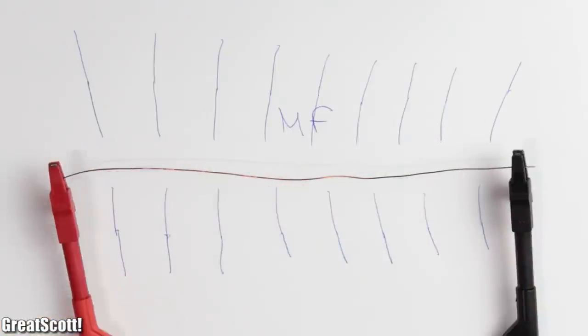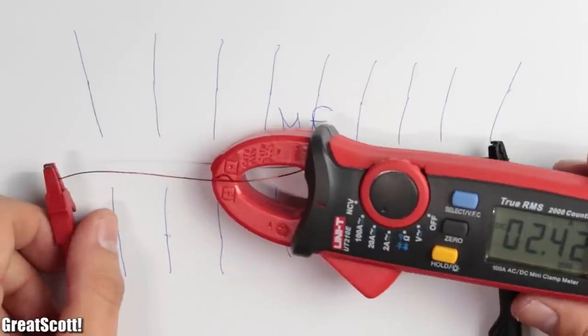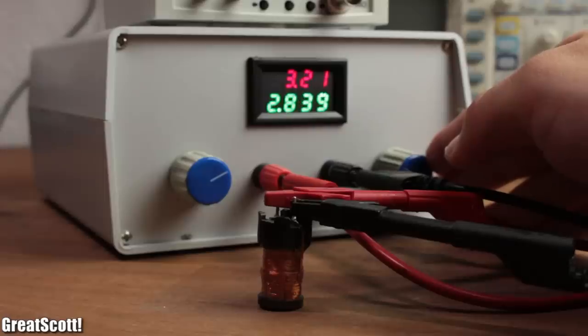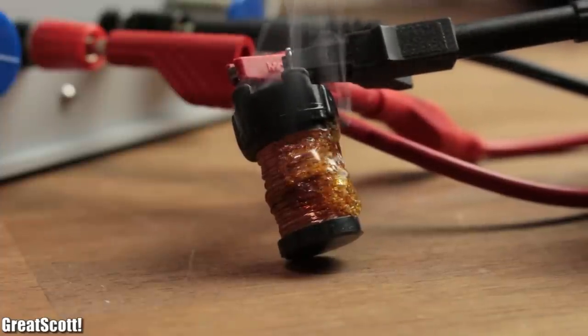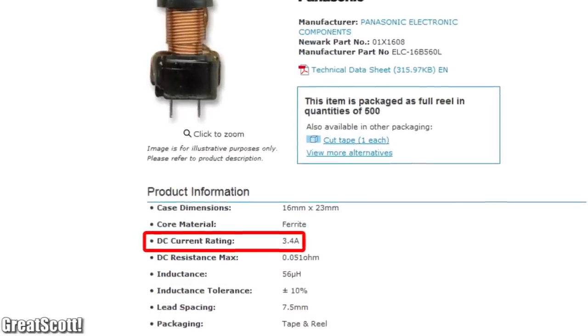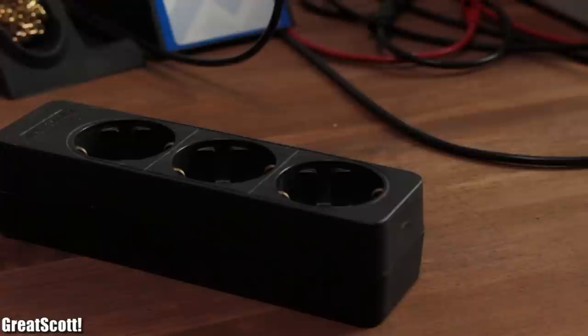More current means a bigger field. We can even measure this field by using my current probe, which then calculates it to a current value. But don't overdo the current flow, otherwise our wire can't handle it and starts glowing. This is actually one basic characteristic value of a coil, the maximum current.